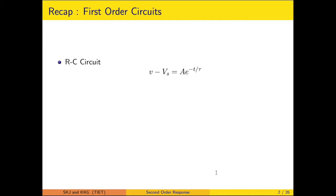Previously in the first order circuit we have gone through this particular equation of a general step response characteristic of an RC circuit. The general solution is A e to the power minus t upon tau, where the coefficient of integration A is obtained by the initial conditions. The capacitor voltage is expressed as V of infinity plus V of 0 minus V infinity, e to the power minus t upon tau. With the help of final response V infinity and initial response V0, we get the complete response of the RC circuit.